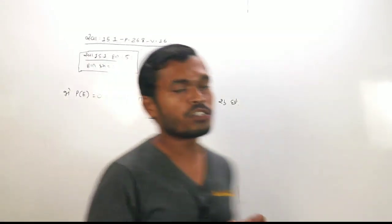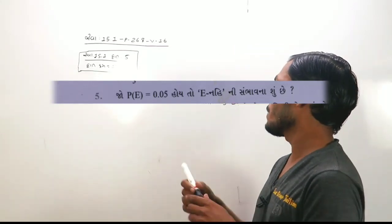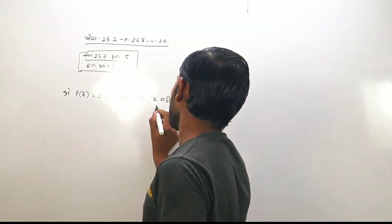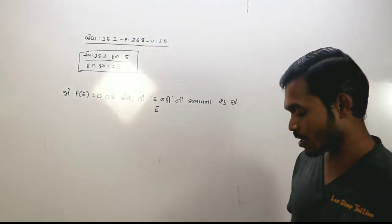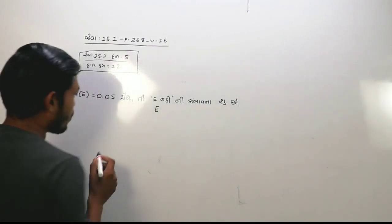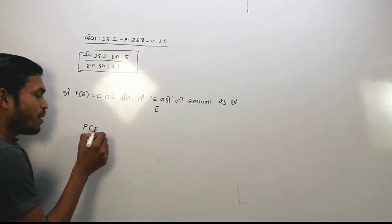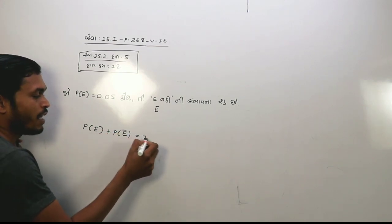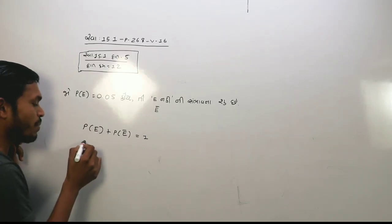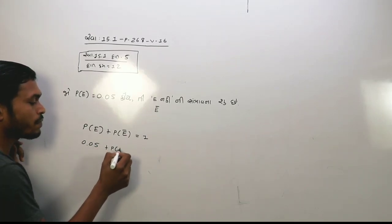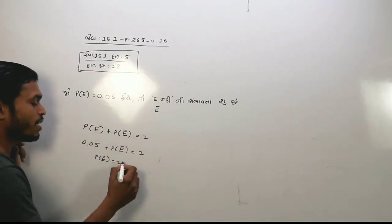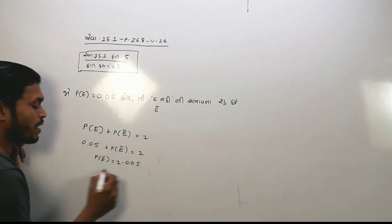P(A) equals 0.05. So P(A) dash, what will be P(A) dash? If you do P(A) dash, it will be in plus 0.05. On the other side, it will be minus 0.05.